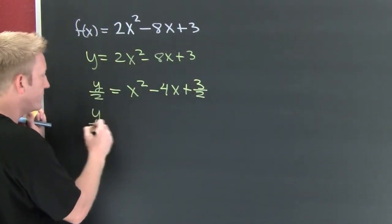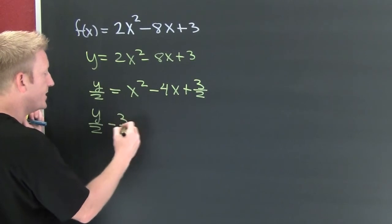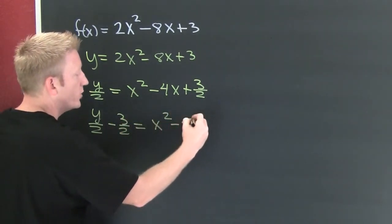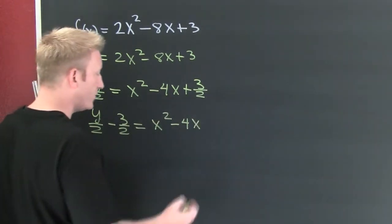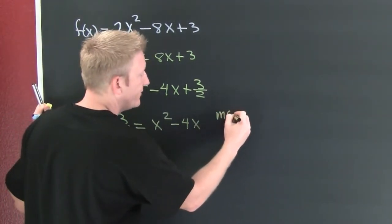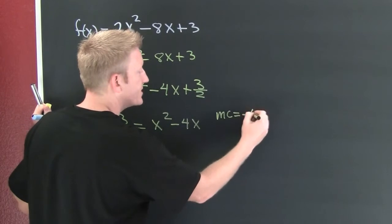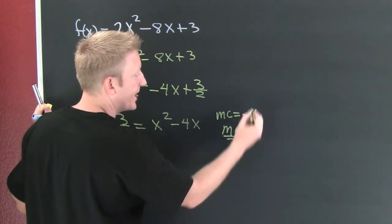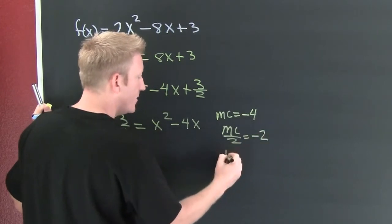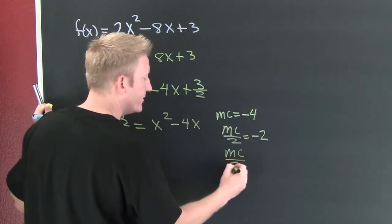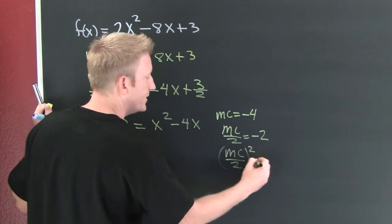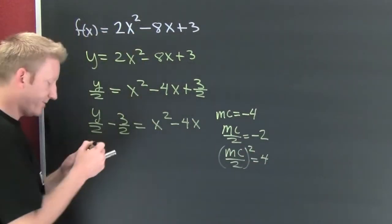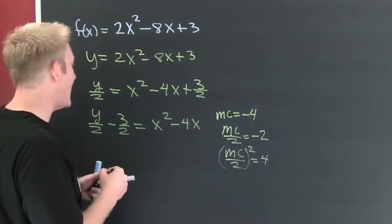Now I need to move my constants: y over 2 minus 3 halves equals x squared minus 4x. Now I need to find my middle coefficient — it's minus 4. Half the middle coefficient is minus 2, and half the middle coefficient squared is 4.